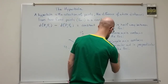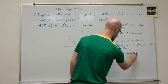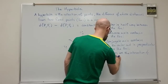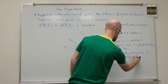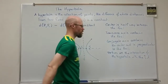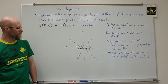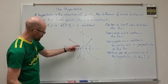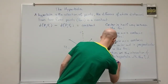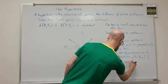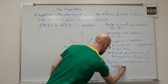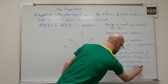The vertices are the intersection of the hyperbola with the transverse axis. The two curves that make up the hyperbola are each called branches.